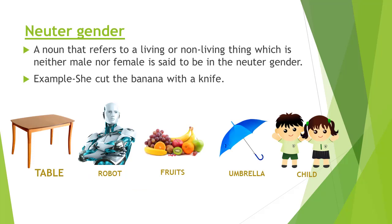Next is neuter gender. Neuter gender represents living or non-living things that are neither male nor female. For example: 'She cut the banana with a knife.' Here, 'banana' is non-living and 'knife' is non-living, so they come under neuter gender. Some examples of neuter gender are: table, robot, food, umbrella, and child.